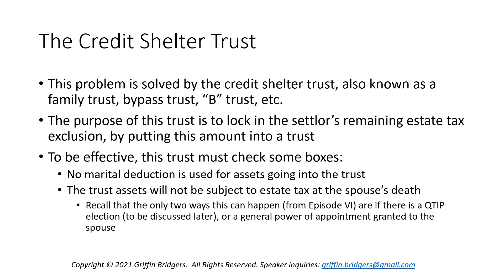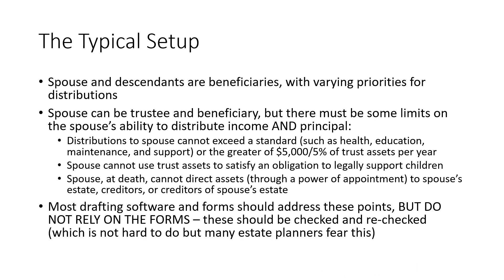Getting back to the credit shelter trust, there are some boxes you must check: you must not use the marital deduction for assets going into that trust, and the trust assets must not be subject to estate tax at the surviving spouse's death. A credit shelter trust is typically set up with spouse and descendants as beneficiaries with varying distribution priorities — maybe the spouse is first, next generation is second, third generation is third — and the sky's the limit as to how you want to set this up, but with some caveats.